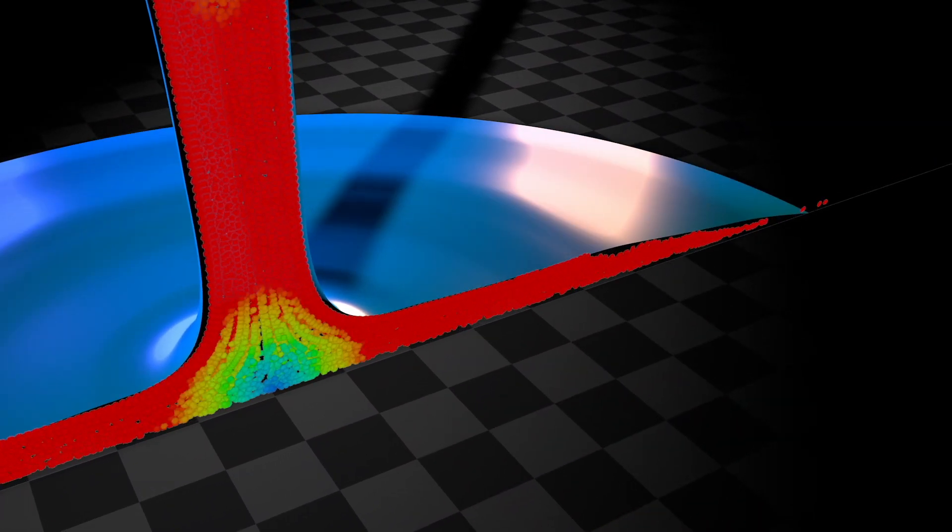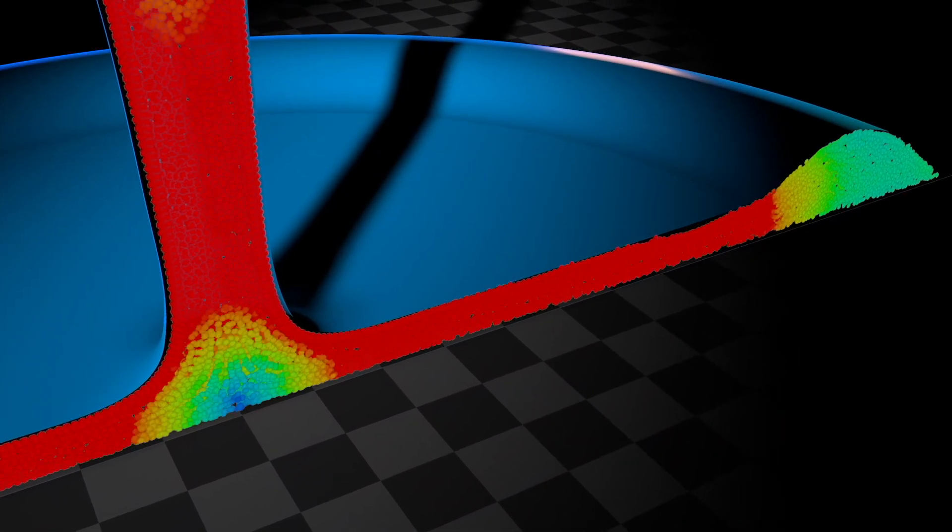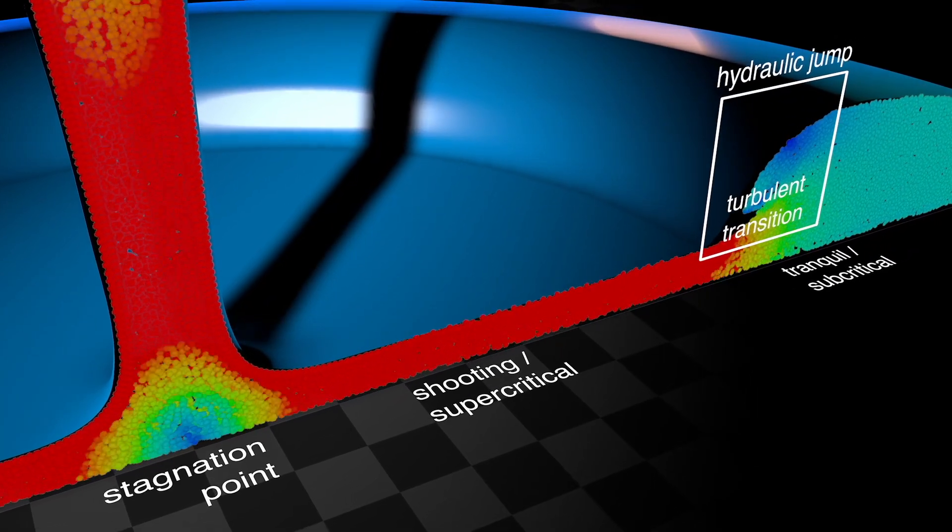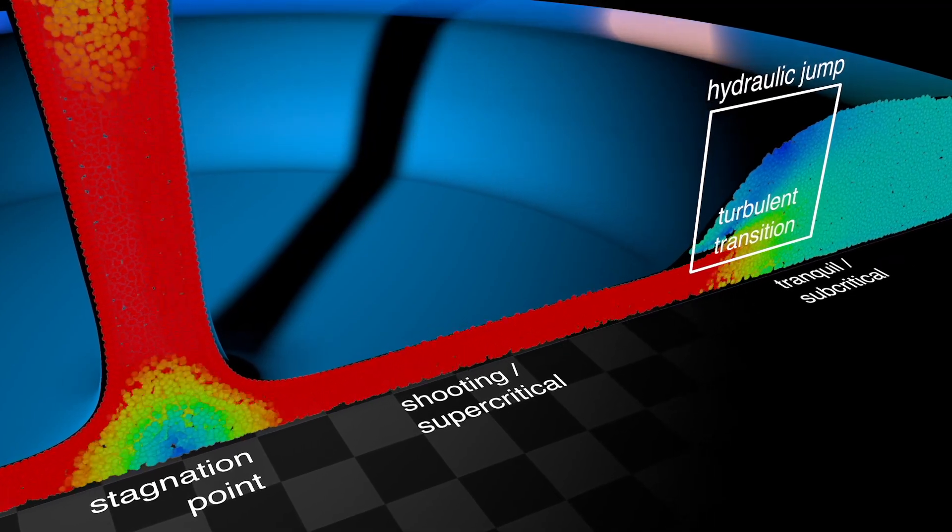At a certain distance further out, the water has more space and flows slower than the propagation speed of disturbances in the water. One also says the water flows outwards.